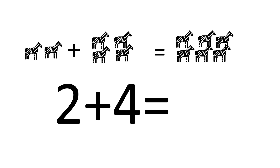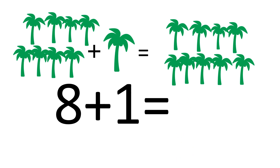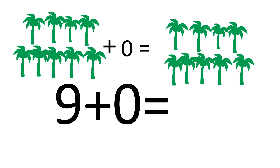How many zebras are there? 2 plus 4 is equal to 6. How many trees are there? 8 plus 1 is equal to 9. How many trees are there? 9 plus 0 is equal to 9.